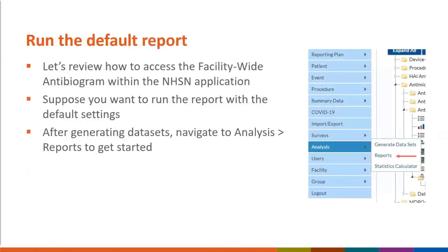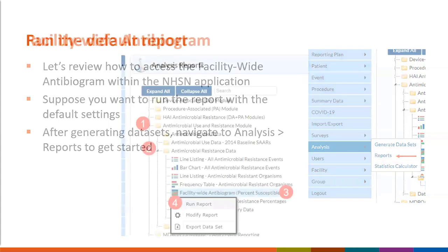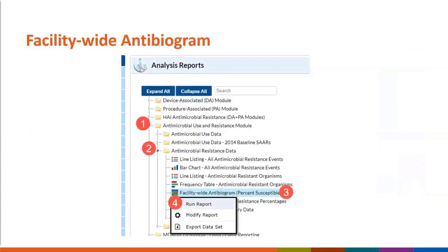Let's take a look. Suppose you want to run the report with the default settings. After first generating datasets, to run the AR option FAC-wide Antibiogram report, you'll click Analysis and Reports to get started. Next, you'll select the Antimicrobial Use and Resistance Module folder, and then the Antimicrobial Resistance Data folder.